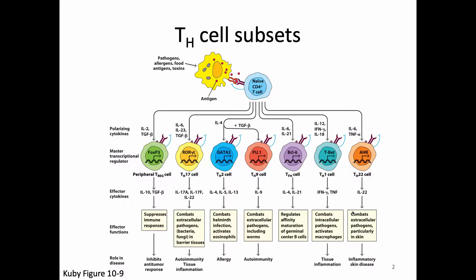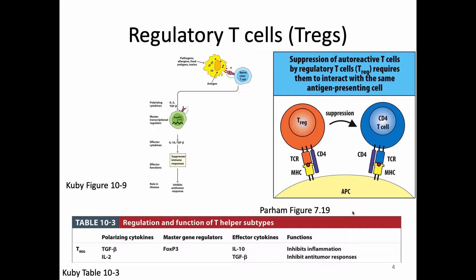We left off last time talking about the last group of helper T cell subsets, which are known as regulatory T cells or Tregs. Regulatory T cells can be polarized in the periphery by having a naive CD4 T cell receive the cytokine TGF-beta. That will make the cell turn on a transcription factor called FOXP3. And when FOXP3 is activated, that cell will begin to make IL-10 and TGF-beta.